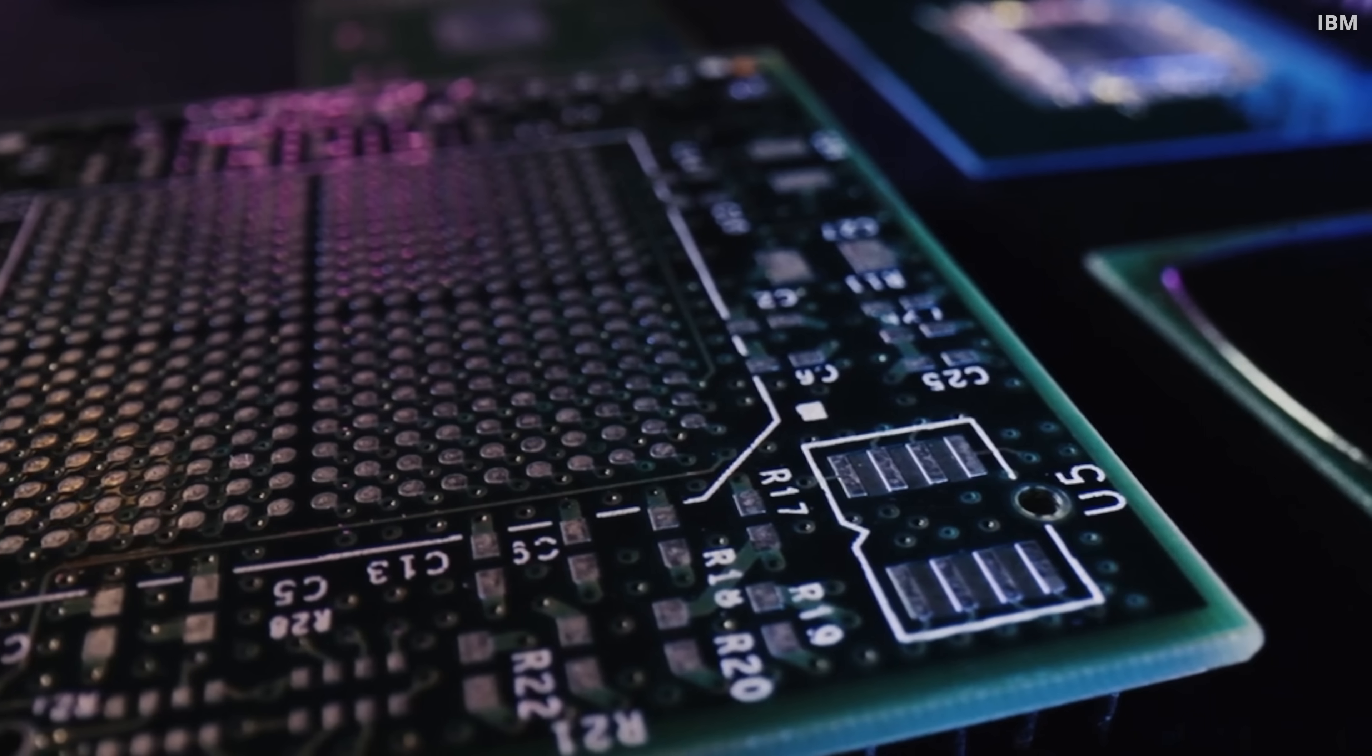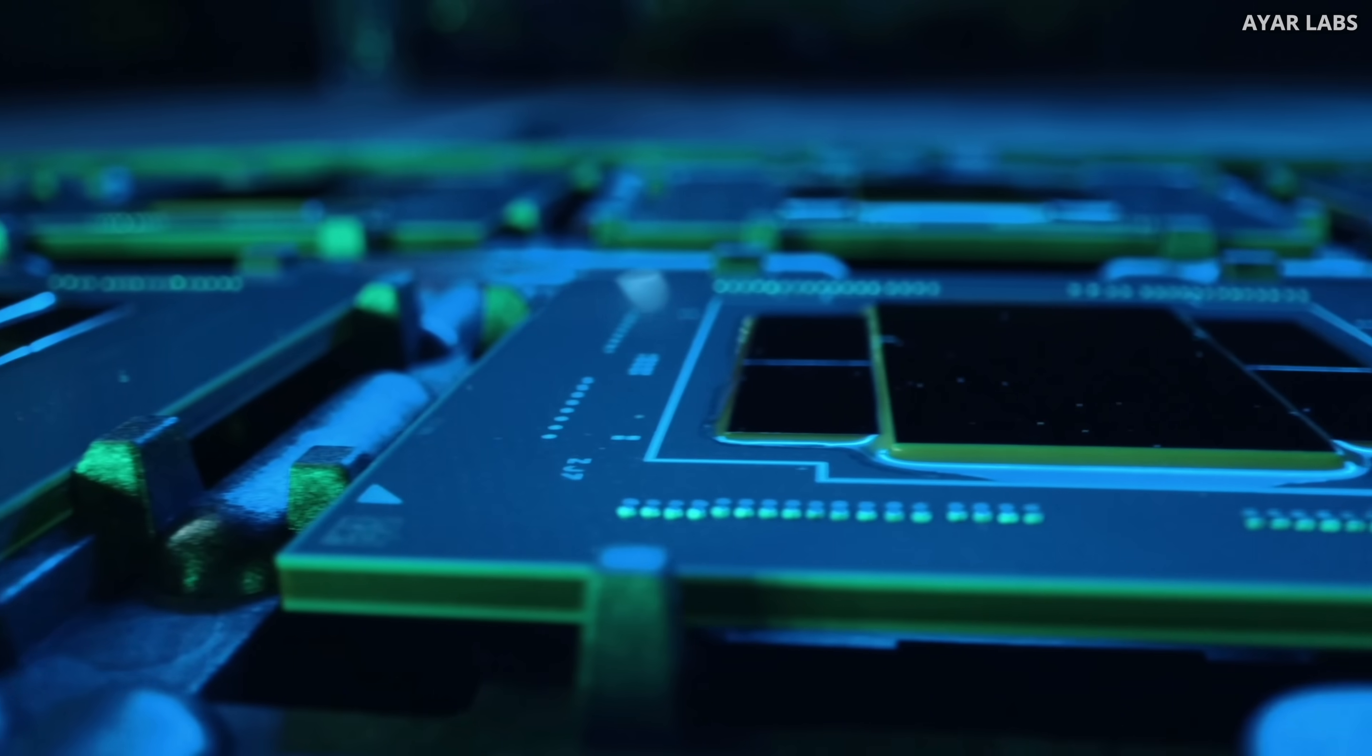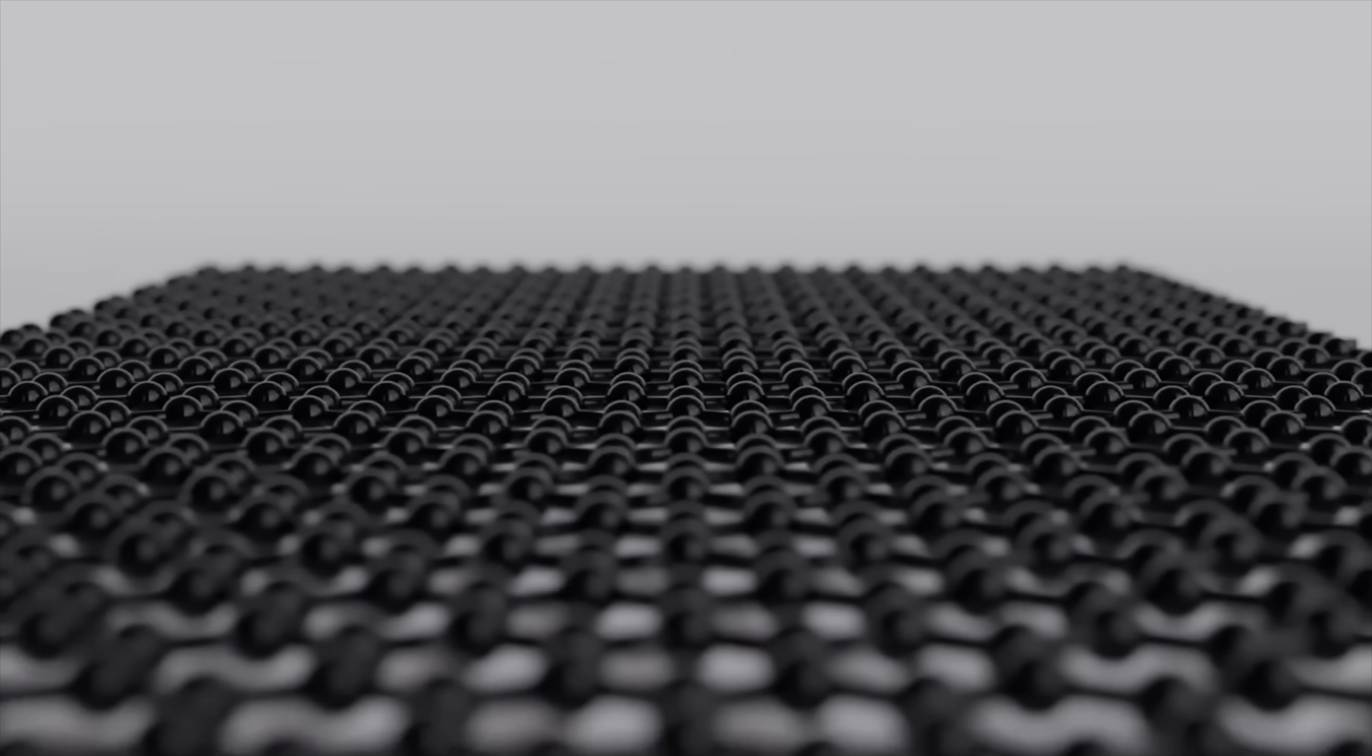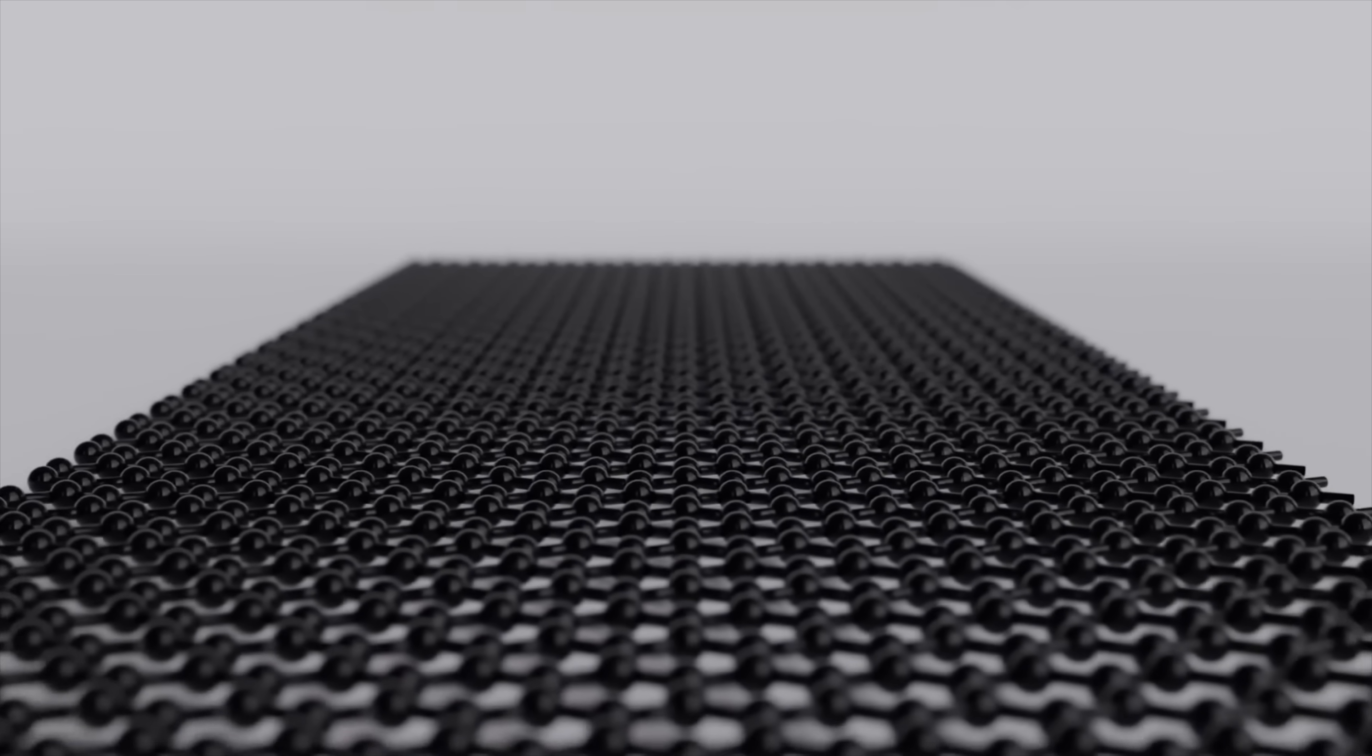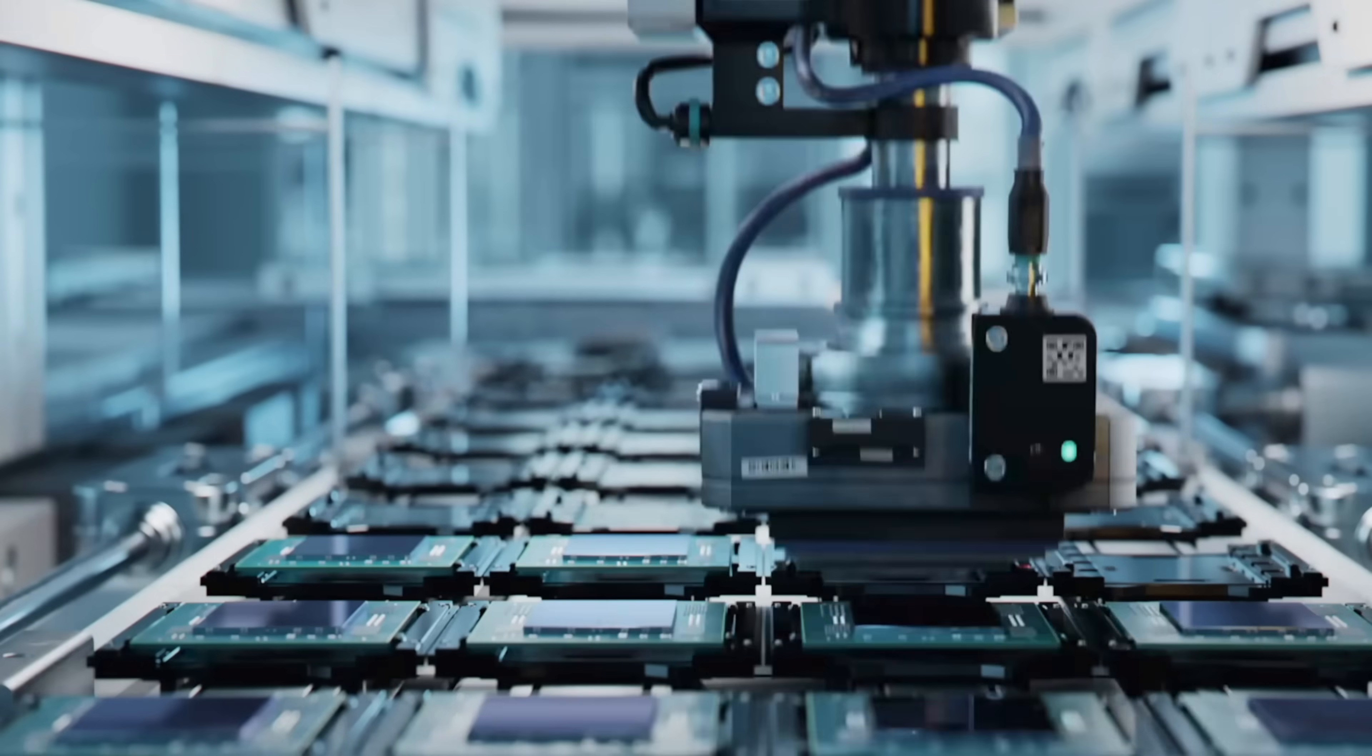What if the future of electronics has nothing to do with silicon? A startup just built an optical chip using graphene, a material just one atom thick. And they're not stopping there. They're building a factory to mass produce it.